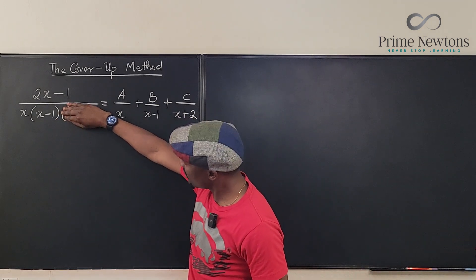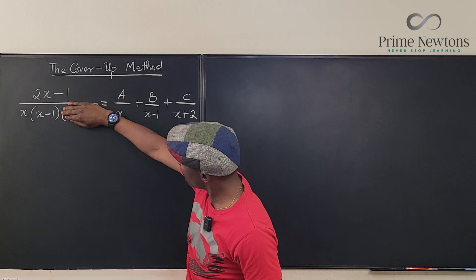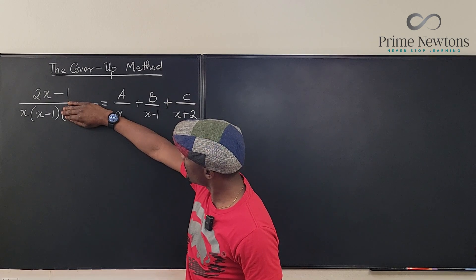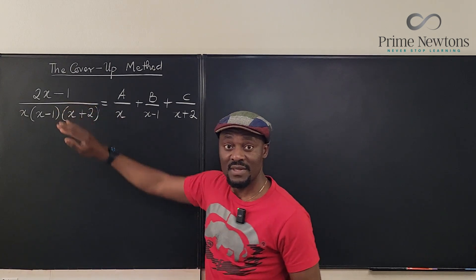And I tell you what this is gonna be. I cover this up and I tell you it's gonna be that six in the bottom and on top I'm going to have negative five. It's negative five over six. And I'm done.